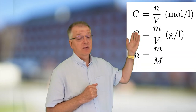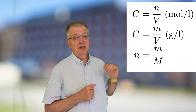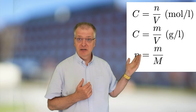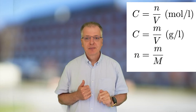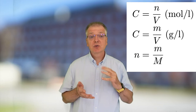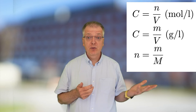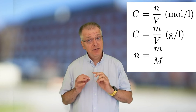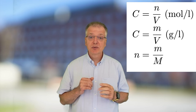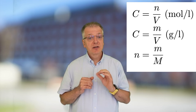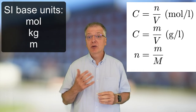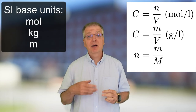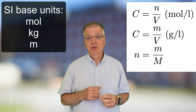I will assume that you are familiar with the equations: c equals n divided by v, so mole per liter; c equals m divided by v, gram per liter; and n equals small m divided by large m. Please note that we can choose different units for the concentration and that you will need to think carefully about which you use. Note also that neither mole per liter nor gram per liter are the base SI units for concentration. Mole per cubic meter and kg per cubic meter are the base SI units for concentration.